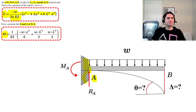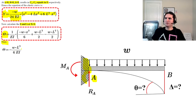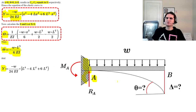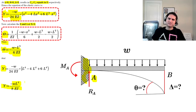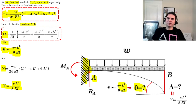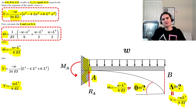Evaluating at x equals L for the free end: theta at B equals negative WL cubed over 6EI, and delta at B equals negative WL to the fourth over 8EI. The negative signs indicate a downward deflection and rotation opposite to the initial direction. So theta is WL³/6EI and delta is WL⁴/8EI in magnitude.